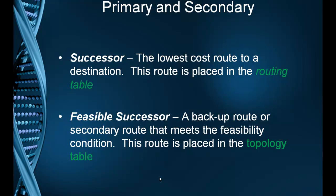Remember, EIGRP has three tables. It has a routing table with the successor routes — the best path to the destinations. It has a topology table, which holds the backup paths to destinations. And then it has a neighbor table, which we'll talk about in a different video. So successors show up in the routing table, and feasible successors show up in the topology table.